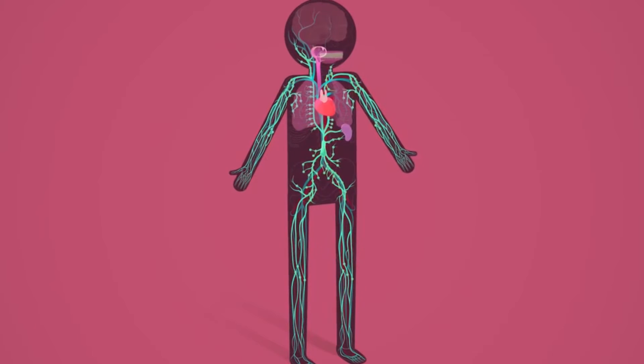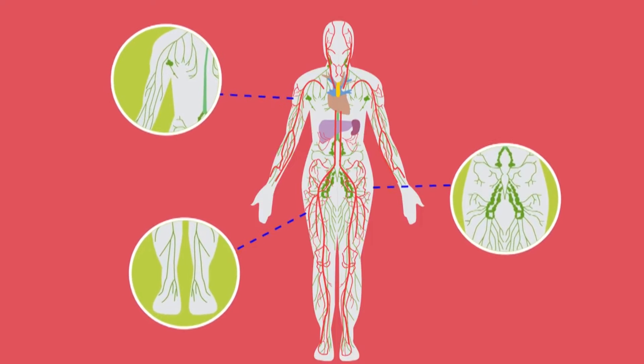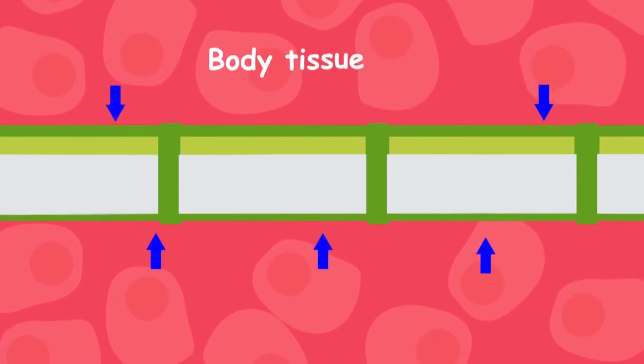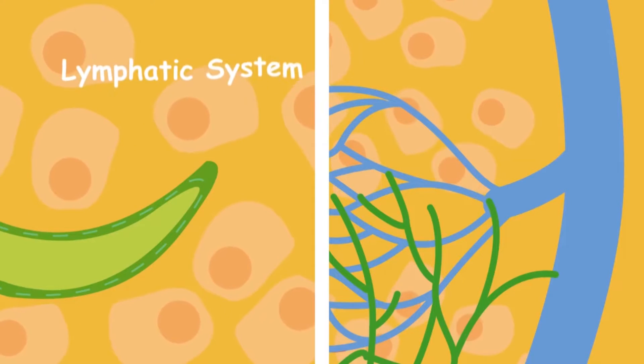Lymph is a clear fluid that is derived from blood plasma. The lymph vessels form a network of branches that reach most of the body's tissues. They work in a similar way to the blood vessels. The lymph vessels work with the veins to return fluid from the tissues.